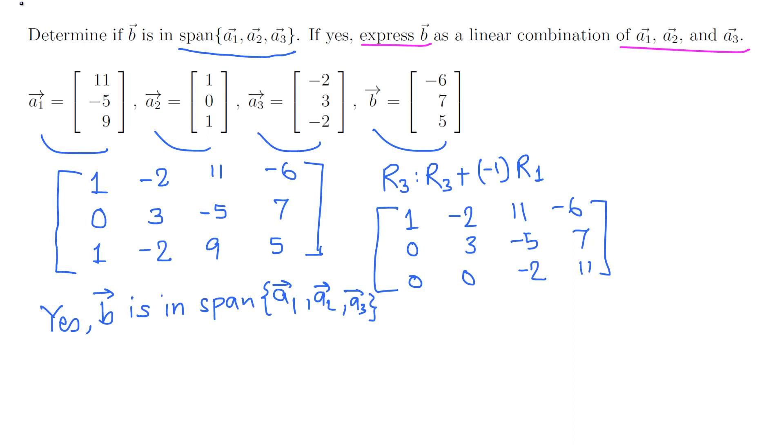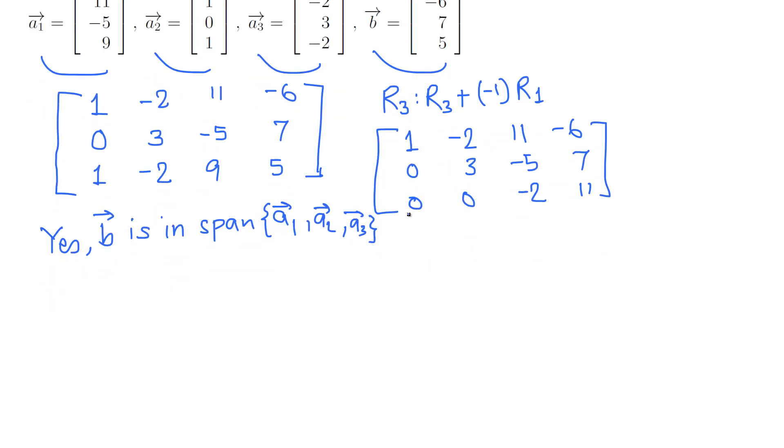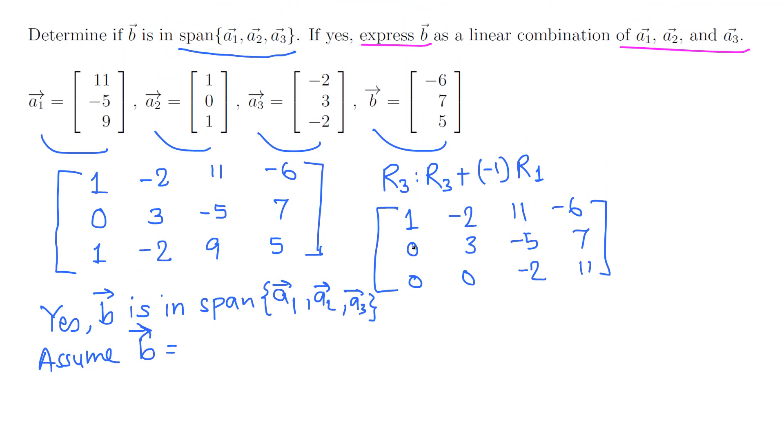Remember, this one is - we wrote a2 first. Now we want to solve this system. Assume the linear combination is B equals c1*a1 plus c2*a2, because we wrote [1, 0, 1], so that's a2, just to match.